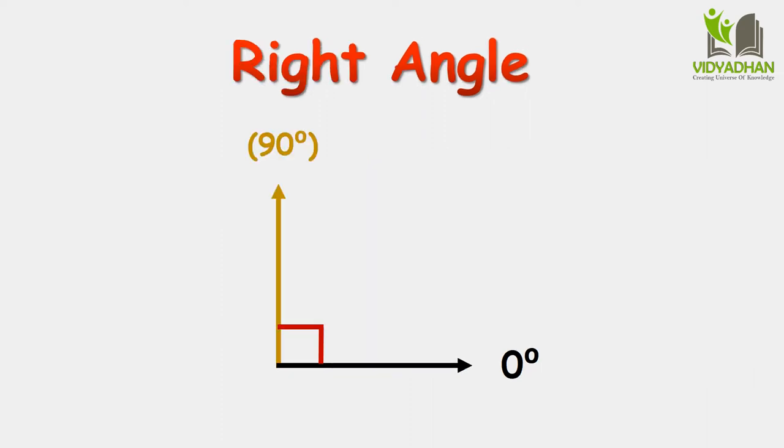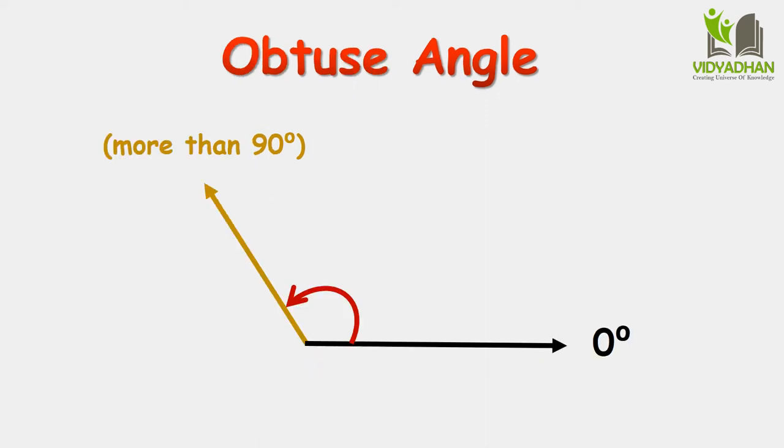Right Angle: Angles of measure 90 degrees are called right angles. Obtuse Angle: An angle which measures more than 90 degrees is called an obtuse angle.